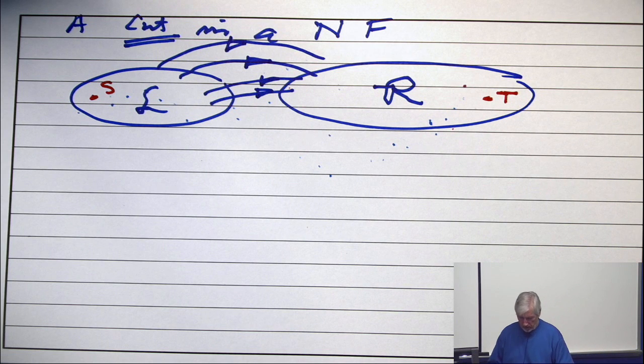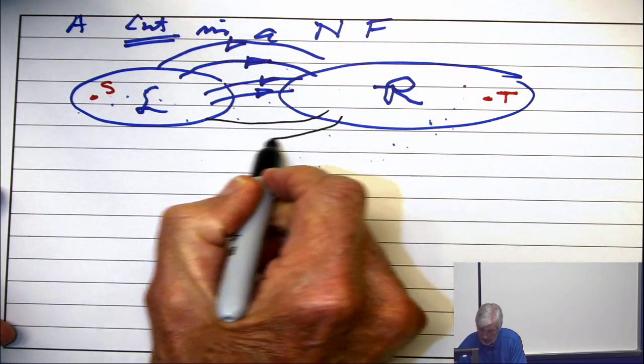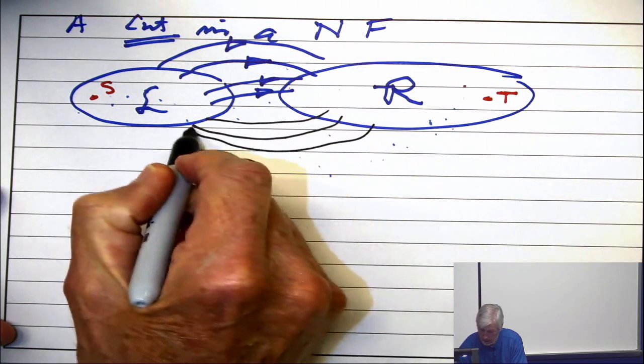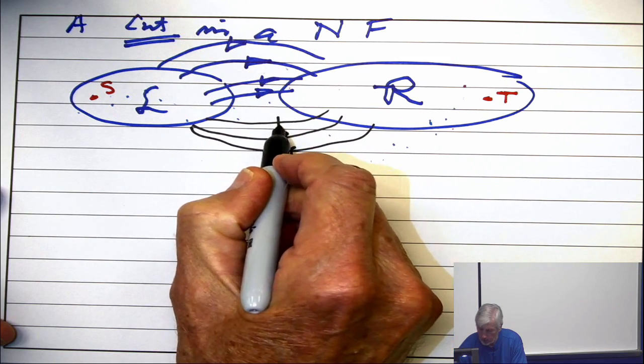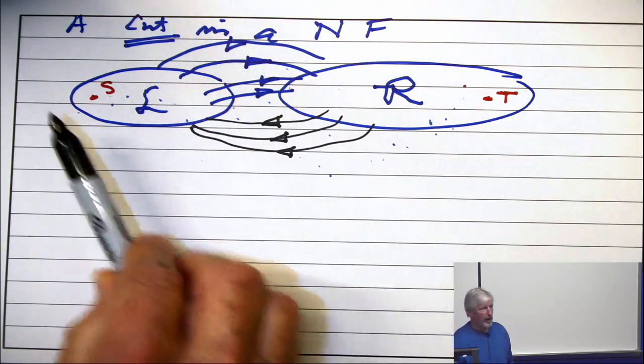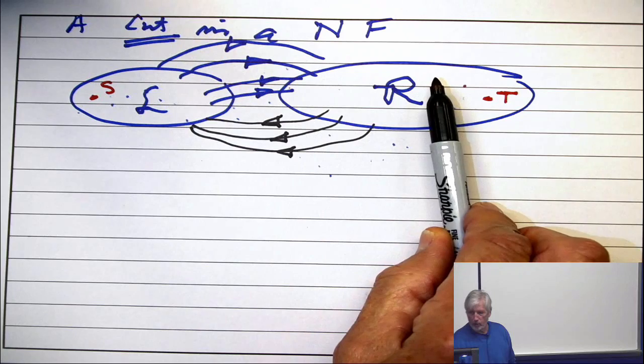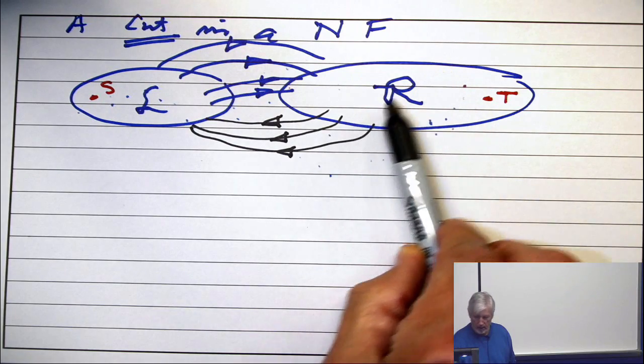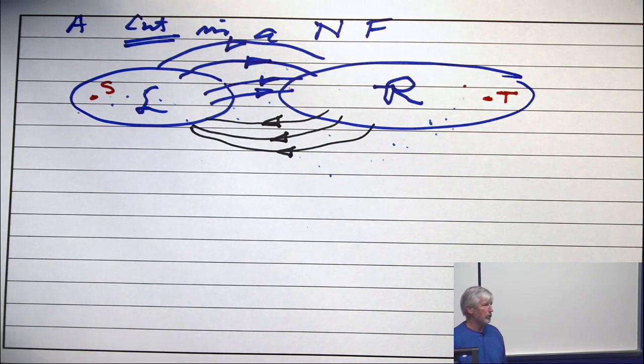There are some edges which come back, in general. So when we're talking about a cut and we specify L and R, there are edges from L to R, they're called forward edges. Edges coming this way from R back to L are called backward edges.